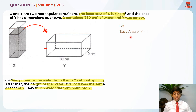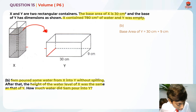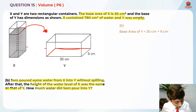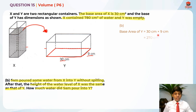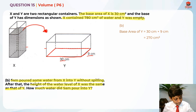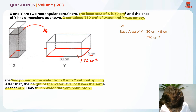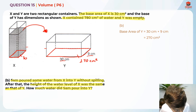First, I'm going to find the base area of Y. The base area of Y has dimensions 30 cm by 9 cm. So I take 30 times 9, which gives 270 cm squared. That is the base area of Y. The base area of X is 30 cm squared.